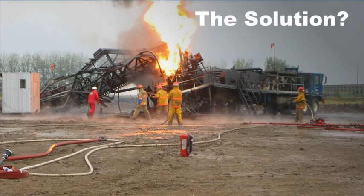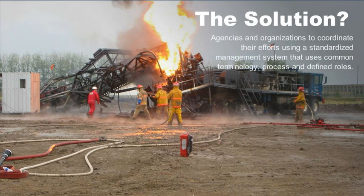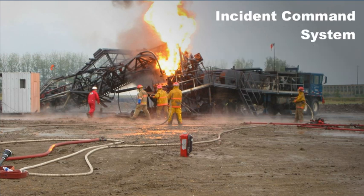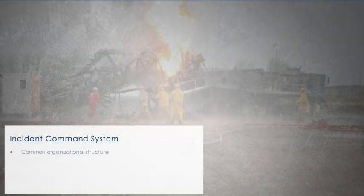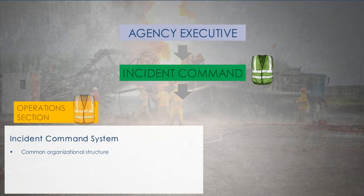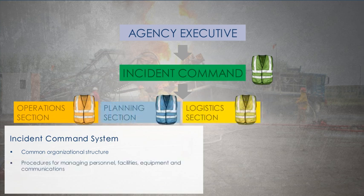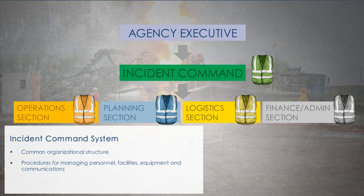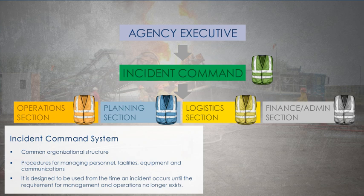The solution for the challenges outlined in the scenario above is for agencies and organizations to coordinate their efforts using a standardized management system that uses common terminology, process, and defined roles. ICS is a management system framework that provides all of that and more. The Incident Command System, or ICS, is a globally recognized on-scene emergency management system. ICS provides a common organizational structure, allowing people from multiple agencies to collaborate effectively, even if they don't usually work together. ICS consists of procedures for managing personnel, facilities, equipment, and communications. It is designed to be used from the time an incident occurs until the requirement for management and operations no longer exists.